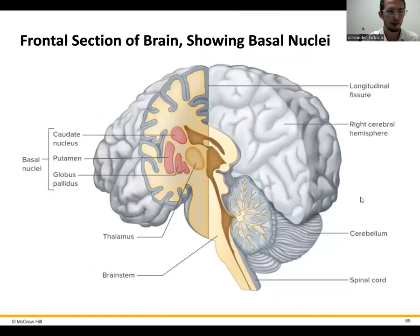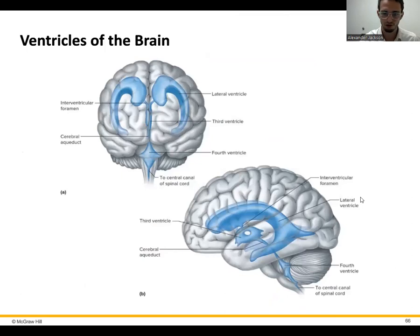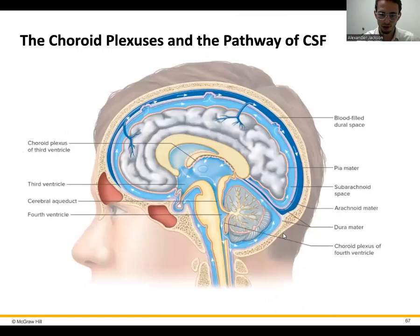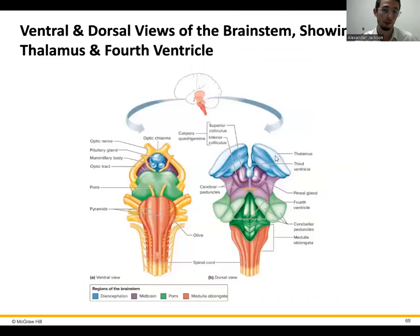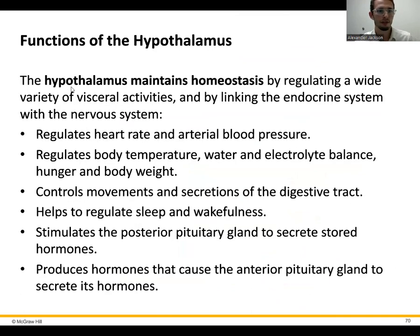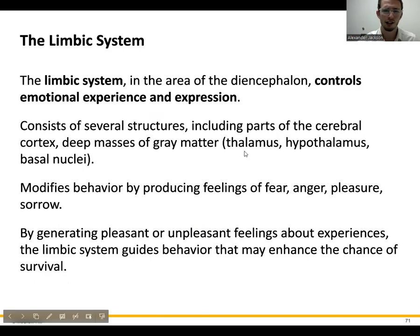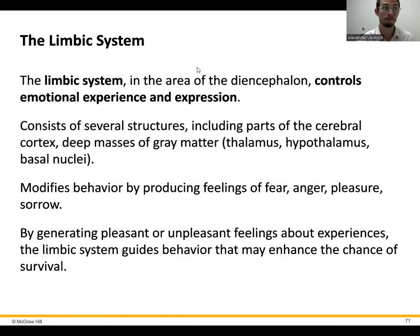Cerebrospinal fluid can be diffused into the ventricles, which nourish the brain. The subarachnoid space contains all that cerebrospinal fluid, and several ventricles nourish different parts of the brain, traveling in an anterior-to-posterior loop. The thalamus is the sorter; the hypothalamus deals with homeostasis, regulating many things. The limbic system, part of the diencephalon near the hypothalamus, deals with emotional experiences — so a stressful event can make you really emotional because it stimulates the limbic system. That can involve anger, fear, and also pleasure.